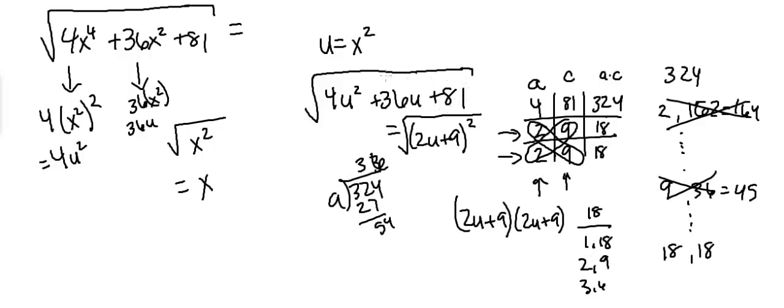So all I did again was I factored the inside, I found out it was 2u plus 9 squared, and then I kept the square root sign. So now, since we're taking the square root of a squared number, that basically cancels out and we get 2u plus 9.